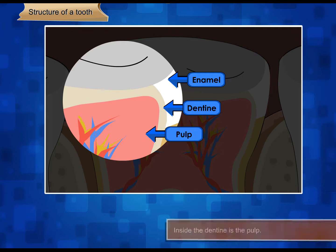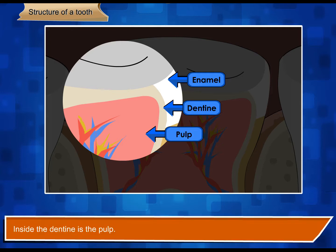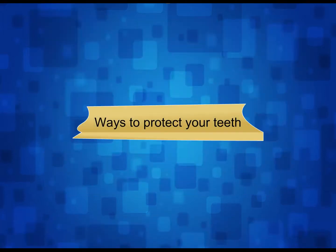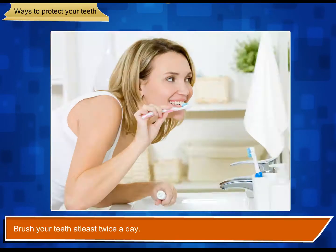Pulp. Inside the dentine is the pulp. The pulp is very soft and full of nerves and blood vessels.